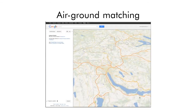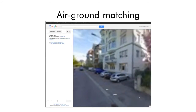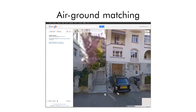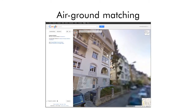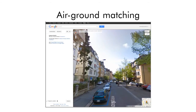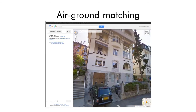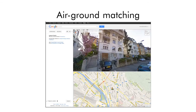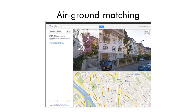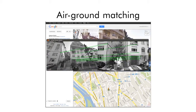In case the correct match is detected, the global position of the flying vehicle is computed. Here we show the correctly matched image feature points between the airborne MAV image on the right and the corresponding ground-level Street View image on the left, detected by our algorithm.